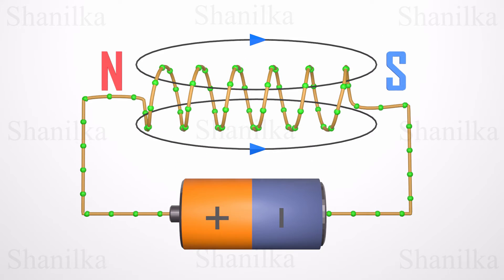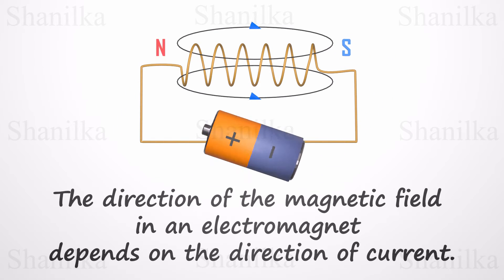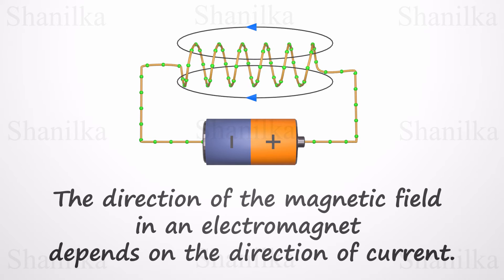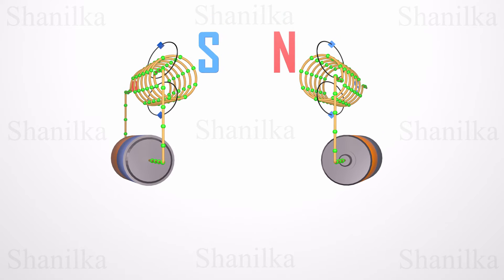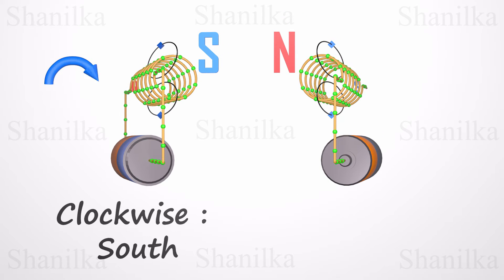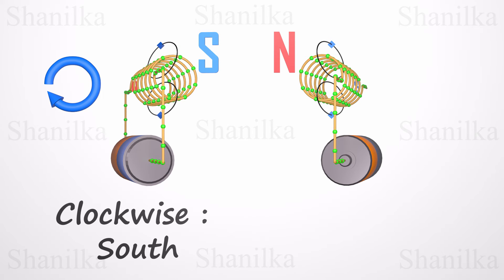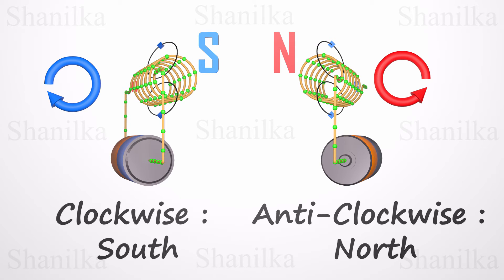Electromagnets also have magnetic poles, and the direction of the magnetic field in an electromagnet depends on the direction of the current. There is a simple method to identify the two poles: if the electricity travels clockwise around the electromagnet, the end you are looking at is the south pole. If the electricity travels counter-clockwise, then the end you are looking at is the north pole.